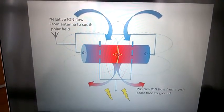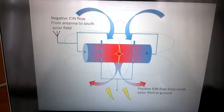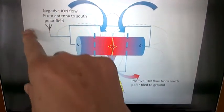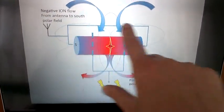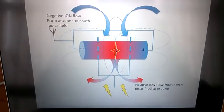But at the end of the day, without all the numbers, this is what happens. You get a negative ion flow from the antenna to the polar field. You see, it comes down here, and here, compressed in the middle, releasing energy at the bottom.